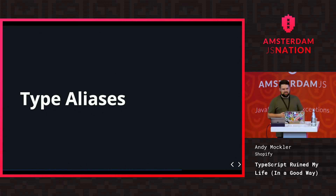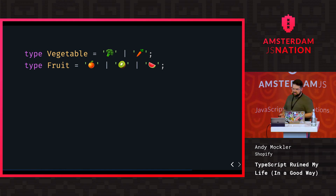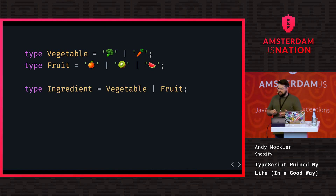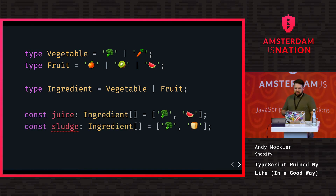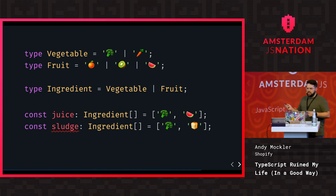Finally, type aliases are sort of the most powerful tool in TypeScript — they roll everything else up into one. You use the type keyword and name your type. One of the tools available is the union operator — the pipe character, which you can think of as 'or'. So Vegetable can be broccoli or carrot, Fruit can be orange, kiwi, or watermelon, and Ingredient can be a Vegetable or Fruit. If I give the juice array broccoli and watermelon the compiler is happy, but if I give it bread — which is not an ingredient — it will flag it.